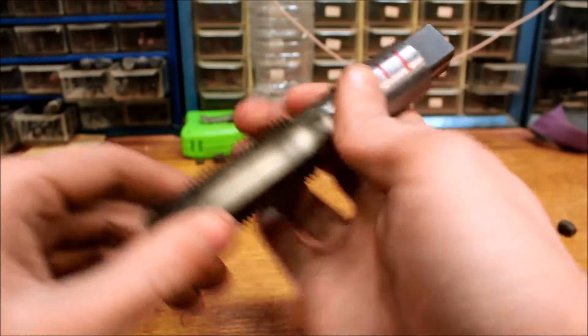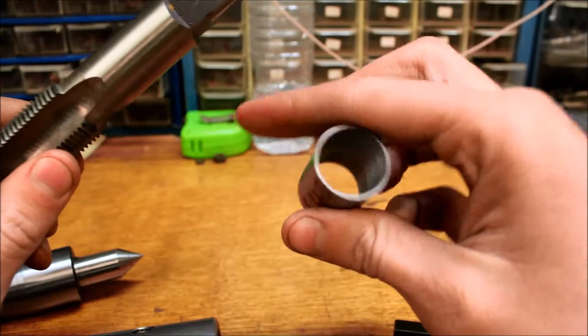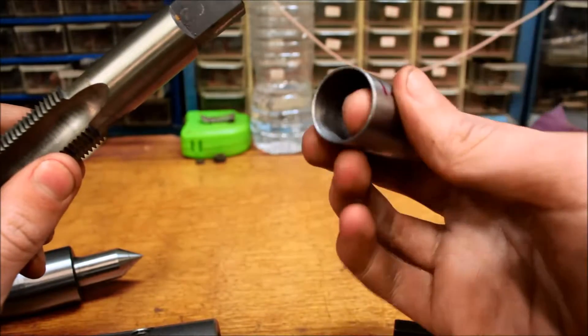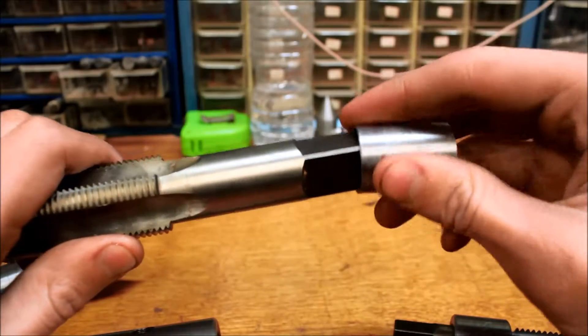This is the biggest tap I made it for - a one and one eighth by twelve. You can see the bushing here, just a simple straight bushing. All these bushings are one inch on the outside.